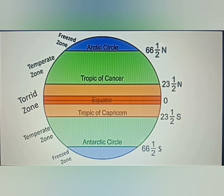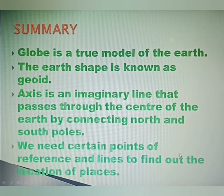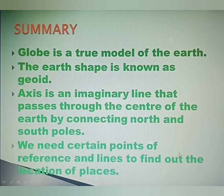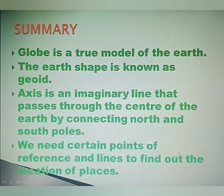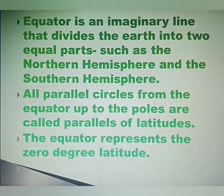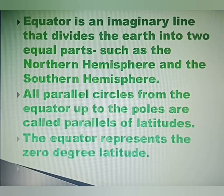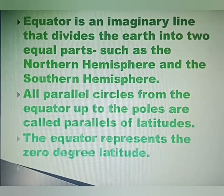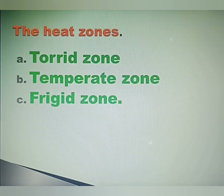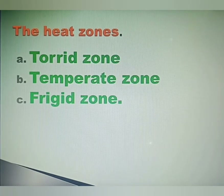In the next section, we will study about the meridians of longitude. Let's recall what we learned: A globe is a true model of the Earth. The shape of the Earth is known as a geoid. The axis is an imaginary line passing through the center of the Earth connecting the North and South Poles. The equator is an imaginary line that divides the Earth into two equal parts — the Northern Hemisphere and the Southern Hemisphere. All parallel circles from the equator up to the poles are called parallels of latitudes, and the equator represents zero degree latitude. Based on the heat received from the sun, the Earth is divided into three heat zones: the torrid zone, the temperate zone, and the frigid zone.